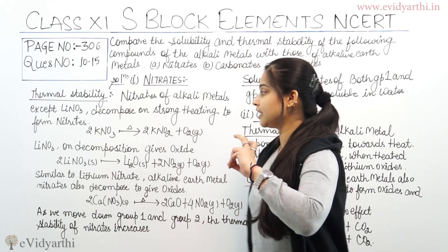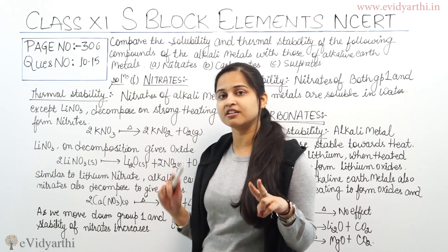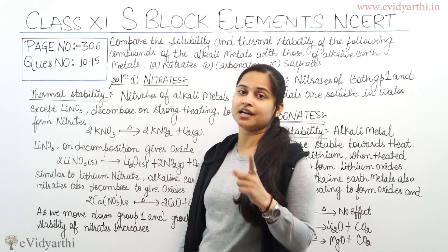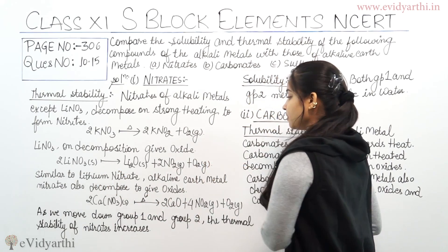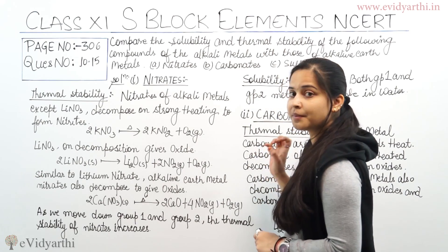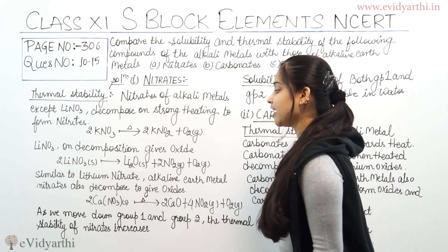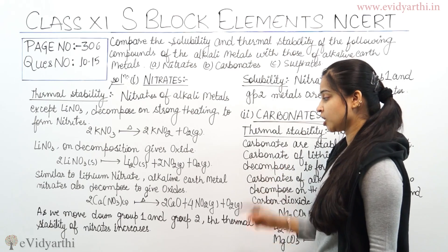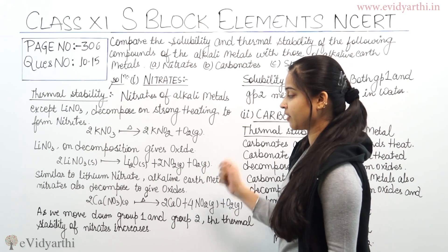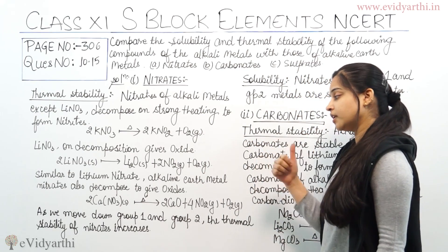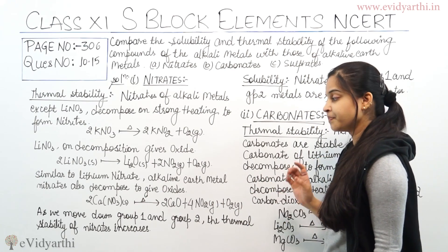Similar to lithium nitrate, alkaline earth metal nitrates also decompose to give oxide. For example, calcium nitrate: 2Ca(NO₃)₂ on heating gives 2CaO plus 4NO₂ gas plus O₂ gas.